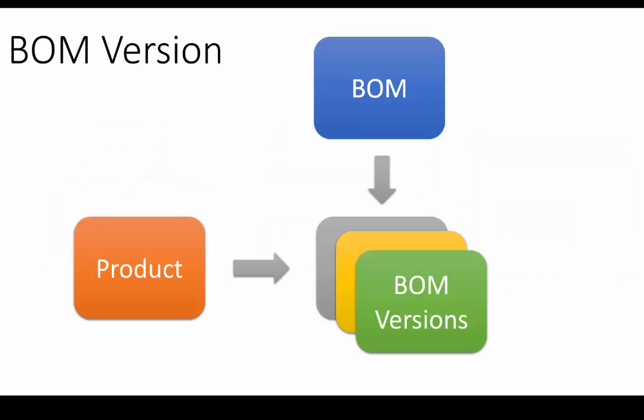Let us understand the last concept: BOM version. If a product is assembled or manufactured in a different way — for example using different component items — then we can create a different BOM version, which refers to a different configuration of BOM components. For example, certain customers purchase the bicycle with a medium-size tire and others with a small-size tire, so we can create two BOM versions accordingly. A BOM version is a specific configuration of a bill of material linked to an item. An unlimited number of BOM versions can be created and attached to an item, as long as different dates, sites, product dimensions, or quantity intervals are defined for each version.